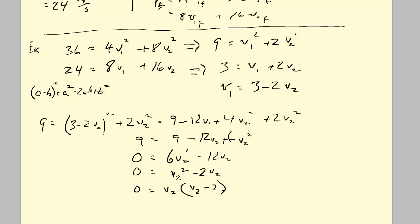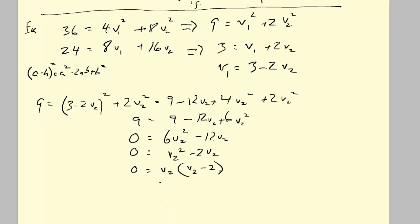By the way, do not divide through by V2. V2 is a variable. If you divide through by V2, you'll be throwing one of the values of V2 away. Factor. Then we use the great mathematical truth that if the product of two quantities is 0, one or maybe both of them are 0. So V2 might be 0, or V2 minus 2 might be 0. This guy implies that V2 equals 2.